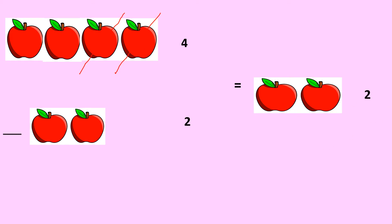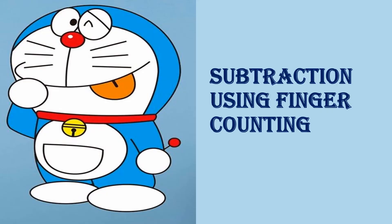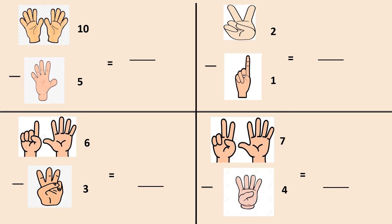After getting to know how to do subtraction using objects, next is doing subtraction using finger counting. So let's learn how to do vertical subtraction using finger counting. Vertical subtraction simply means subtraction in the form of a standing line.